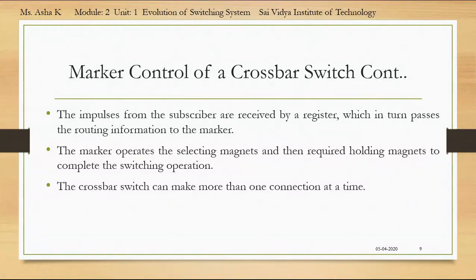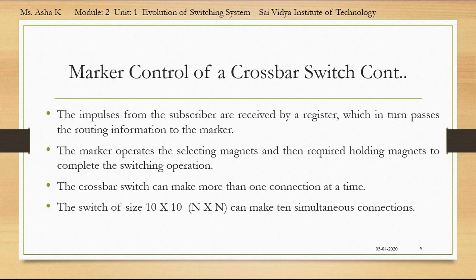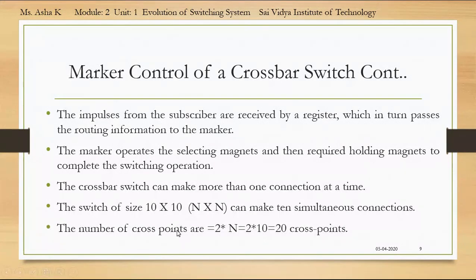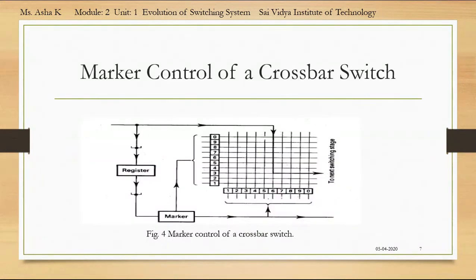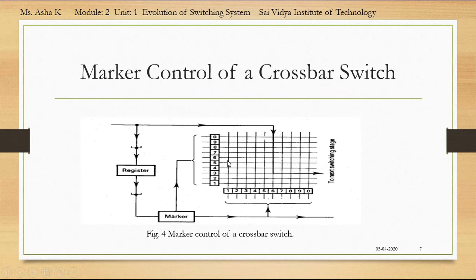The crossbar switch can make more than one connection at a time. A switch of size 10×10 can make 10 simultaneous connections. The number of cross points is 2×n, that is 2×10 = 20 cross points. The marker control of a crossbar switch has a marker and a register to make the connection between inlet 3 and outlet 6, which then goes to the next switching stage. The marker and registers provide the suitable connecting path between the incoming line and outgoing line by energizing the horizontal bars and vertical bars using the horizontal magnets and vertical magnets.